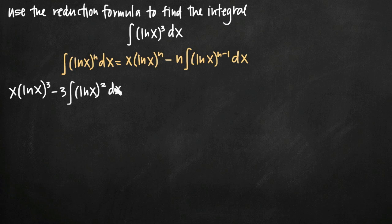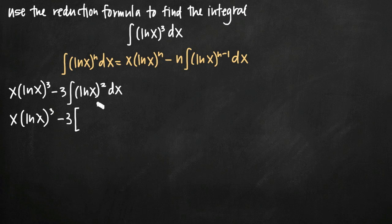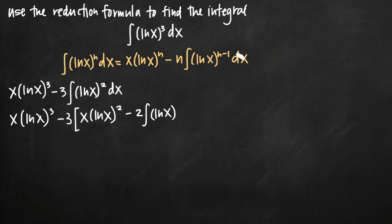We can apply this reduction formula again with n equal to 2. The front part — x ln of x cubed minus 3 — stays, and we draw a big parenthesis. In place of the remaining integral, we plug in the right-hand side of the formula. So we get x times the quantity ln of x raised to the 2nd power, minus 2 times the integral of the quantity ln of x raised to n minus 1. With n equal to 2, that's 2 minus 1, which is just 1, giving us the integral of ln of x to the first power dx. We close the parenthesis.